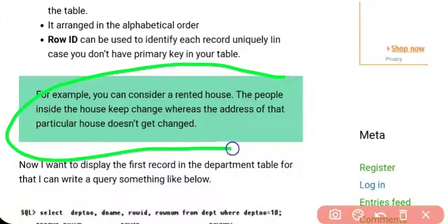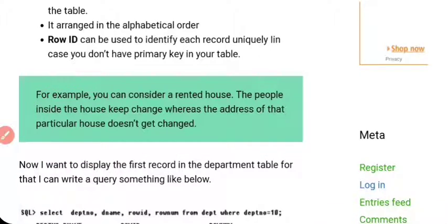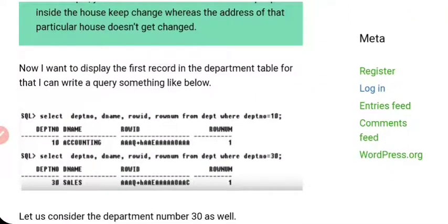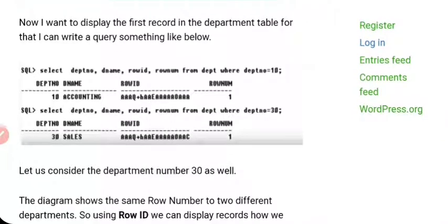Consider a rental house — the people inside the house keep changing but the address of that house doesn't change. Similarly, whatever SELECT statement or WHERE clause you use, the ROWNUM will keep changing based on that. But ROWID doesn't get changed when you update records. The ROWID is deleted only when you delete a record or drop the table.